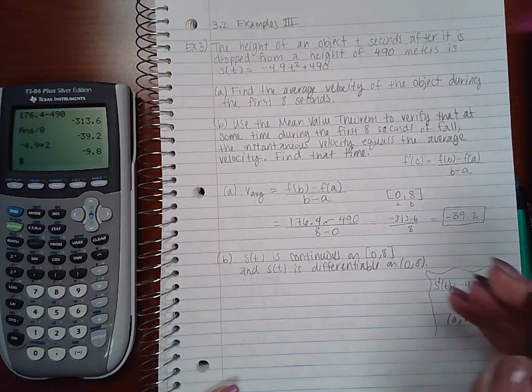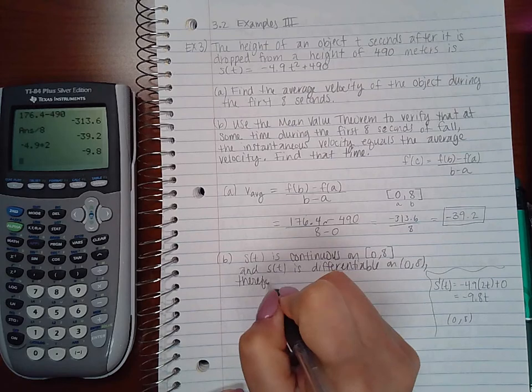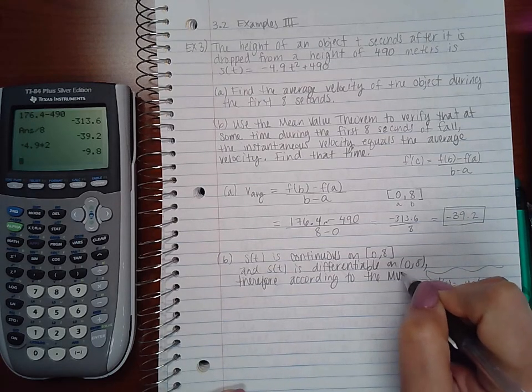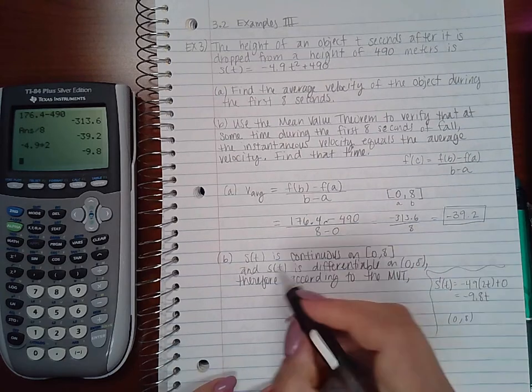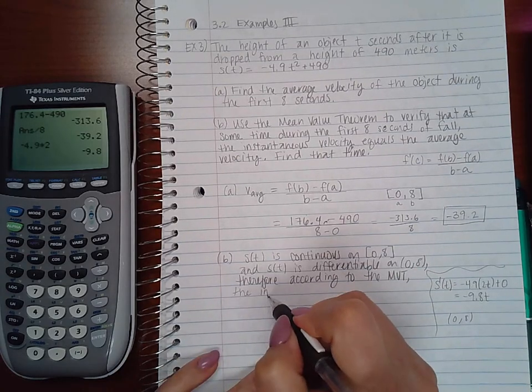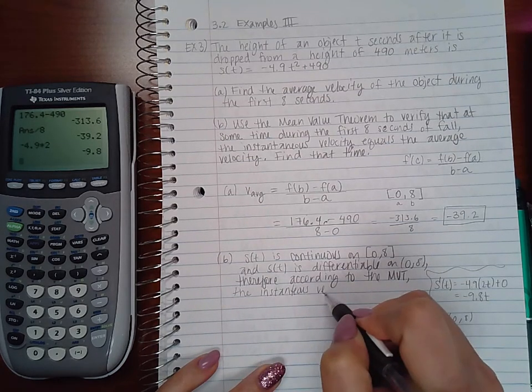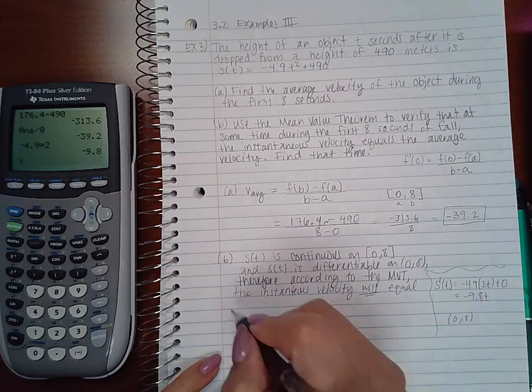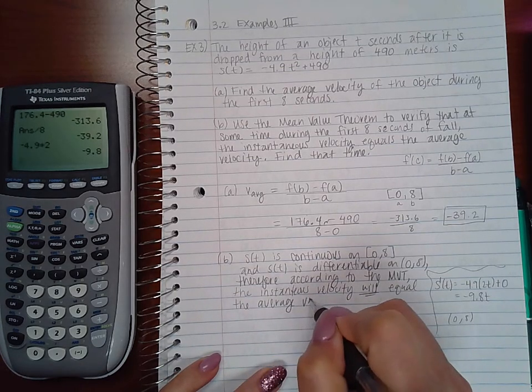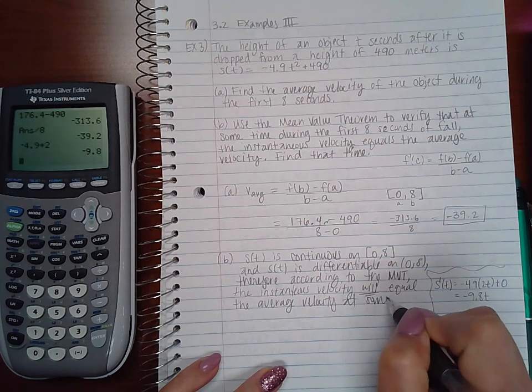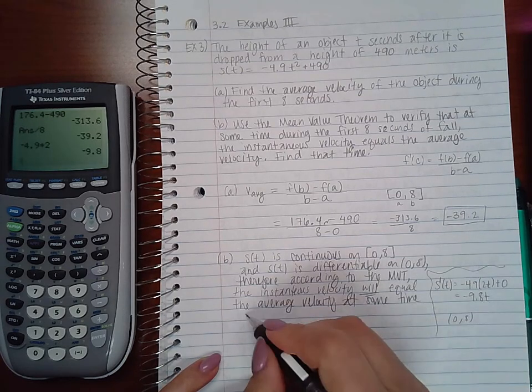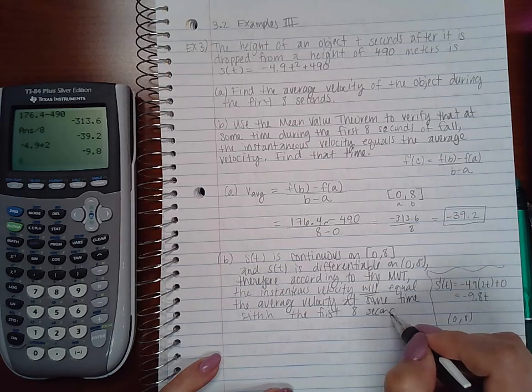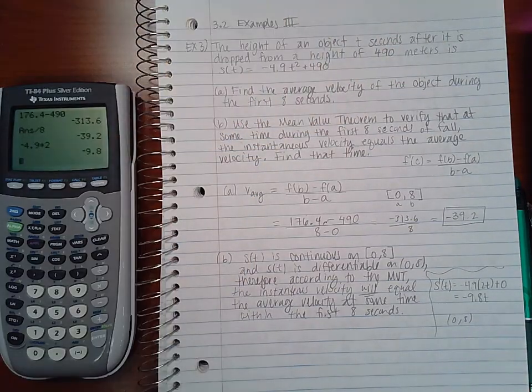This means, therefore, according to the mean value theorem, the instantaneous velocity will equal the average velocity at some time within the first 8 seconds. So this is you verifying what they asked you to verify up here.